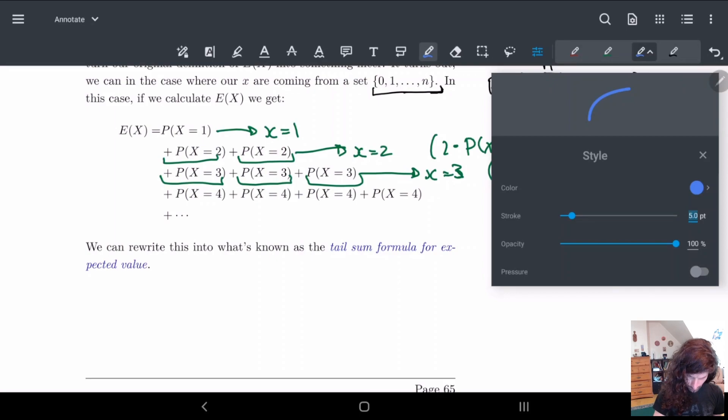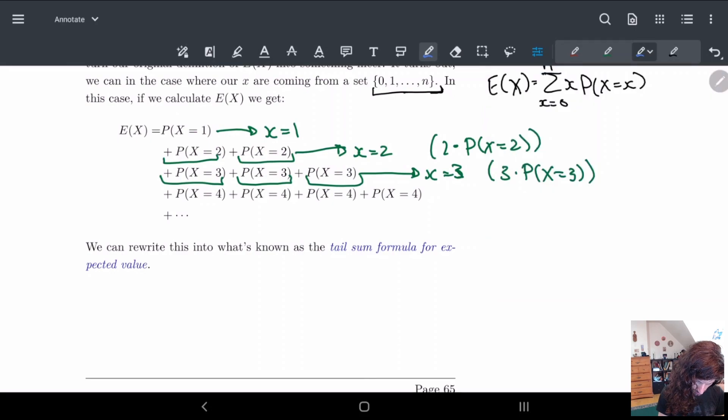Can I make this smaller? There we go. So we did this and then this, and then this, etc. That's how originally we did the expected value.